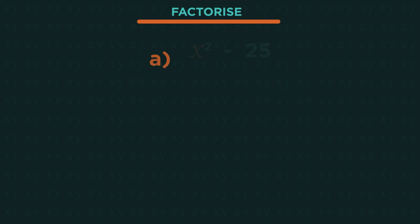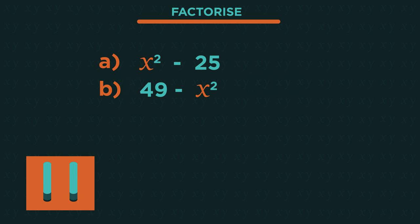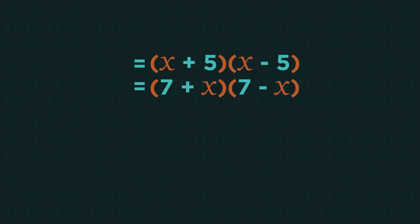So here are two for you to factorize. Pause the video, factorize, and click play when you're ready. Did you get them right? Did you get the second one right? It's still the difference of two squares, but you just put the numbers first and the x's second.